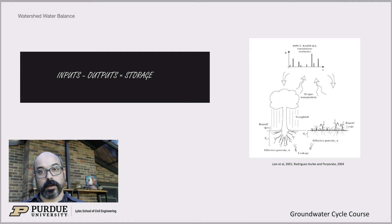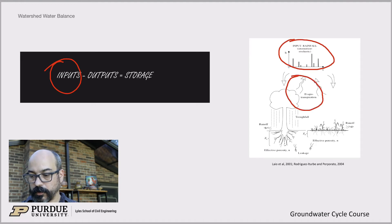Okay, so input minus output equals storage. Now, where are the inputs? Where are the outputs at the watershed scale? And again, here on the right-hand side, you have a schematic from Lajo et al, 2001. This is also in the Rodriguez-Iturbe, and Porporato 2004 book on Stochastic Hydrology. But here you can see that the inputs are basically just the rainfall. So inputs are rainfall.